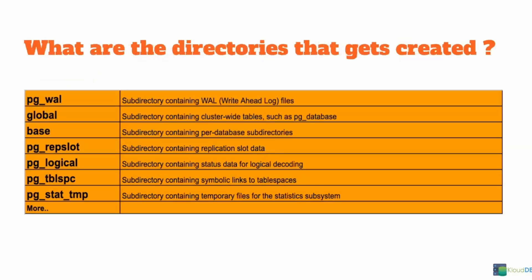These are some of the important directories created when you initialize the cluster. First is pg_wal, which contains the WAL files. WAL files are really important for replication and point-in-time recovery — we'll cover them in depth in the replication and backup recovery chapters. Global is a subdirectory containing cluster-wide tables such as pg_database. Base is important — it's a subdirectory containing the actual table files, with a pg_database subdirectory for each database under the cluster. pg_replslot is a subdirectory containing replication slot data, which we'll discuss in the replication chapter.